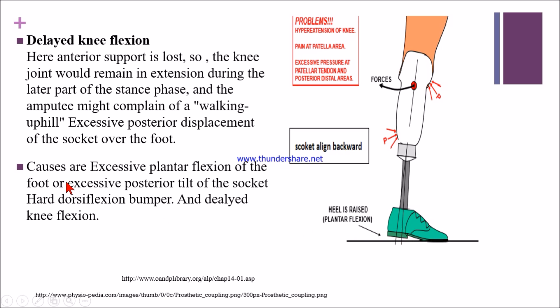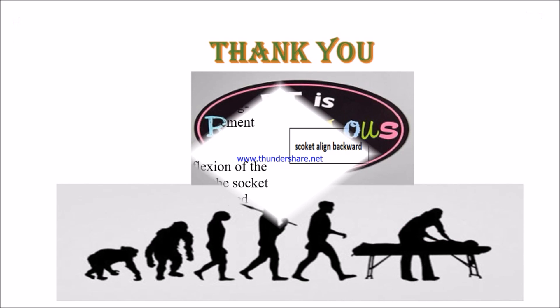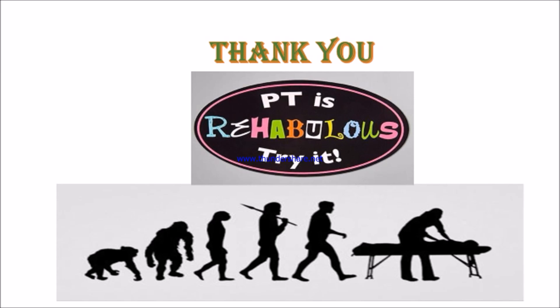If there is excessive plantar flexion of the foot because the dorsiflexion bumper is too hard, and the socket is aligned posteriorly, there will be delayed knee flexion because the ankle goes into plantar flexion. Thanks for watching, and don't forget to subscribe. Special thanks to my friend Priyanka, who made the mnemonics for all the prosthetic gait deviations.